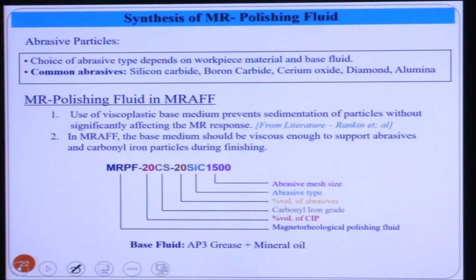The different phases — the magnetic dispersed phase, continuous base medium phase, additives, and abrasive particles — have already been discussed. For the synthesis of MR polishing fluid, we use 20 percent by volume CS grade and 20 percent by volume silicon carbide with 1500 mesh size. Common abrasive particles are silicon carbide, boron carbide, diamond, and alumina.